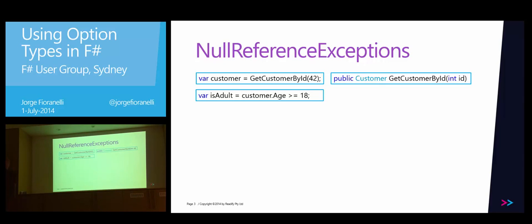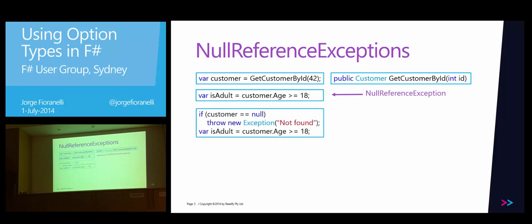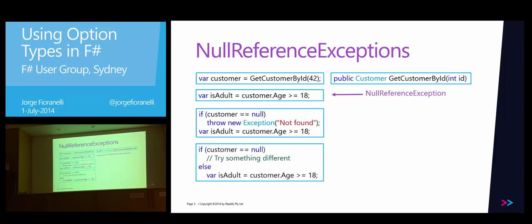Whenever I want to consume that customer and access the property age, I could get a null reference exception. So now my code should look like this — I need to check if the customer I got was null, just in case. And in that case I would throw an exception or do something else. What that means is that in every single place where an object is returned, I need to check if it was null or not.